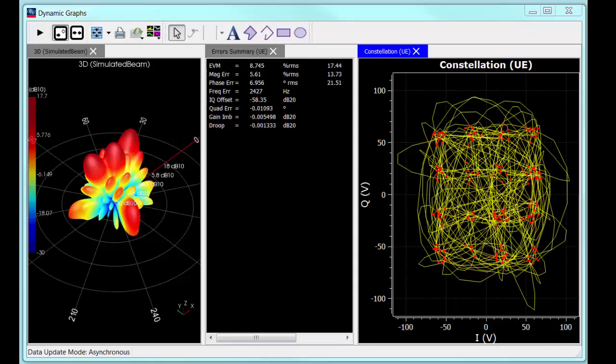Let us measure the constellation and the error vector magnitude, EVM, of the received signal by each user. Here, we are seeing the user 1 signal quality. We were expecting to see a very good constellation and very low EVM. But that's not the case.